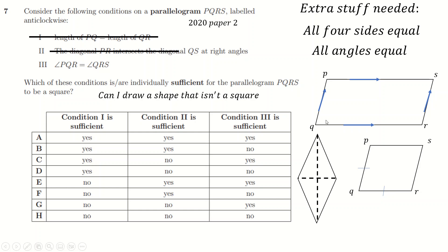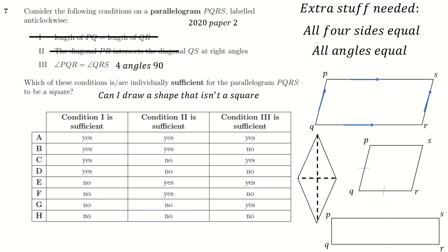Option C: angle PQR equals angle QRS. PQR is here and QRS is there. We discussed how parallelograms have co-interior angles, so if this equals this, they must both be 90 degrees, which means all four angles are 90 degrees. But can I draw a shape with four 90-degree angles that isn't a square? Yes — a rectangle. So that's not sufficient either. So the answer is no to all three options in this question.